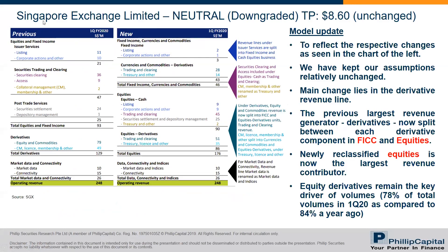On the left-hand side is the previous classification format, where total derivatives is 129 million. On the right-hand side is the new format, where equity derivatives are split from the 129 million to classify under the equity segment, and the remaining derivatives are under the currency and commodities segment. It's the 43 plus 86 that gives you the 129 million in the previous format. The main change is that the previous largest revenue generator is now split between FICC and equities.